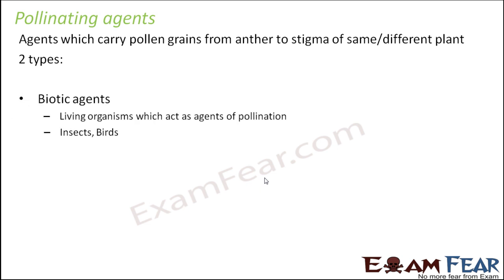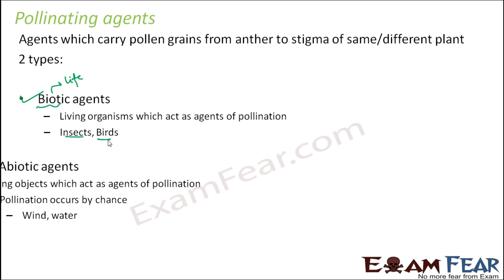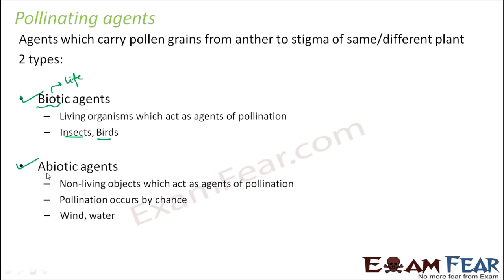Pollinating agents are classified into two categories. First are biotic agents — 'bio' means something related to life, so biotic agents are the living organisms which act as agents of pollination; for example, insects, birds, and even some animals. The next are abiotic agents, which are non-living objects acting as agents of pollination; for example, wind and water.